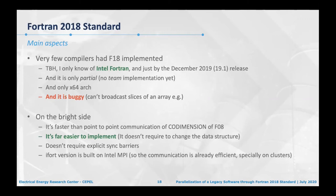It is a new feature, so bugs are expected. On the brighter side, it is faster than the point-to-point communication of co-dimensioned Fortran 2008. It is far easier to implement because I don't need to change my data structure like with OpenMP, or co-dimension variables like traditional coarrays. It doesn't require explicit sync barriers since collective functions have built-in barriers, and Fortran 2018 collective functions are built on Intel MPI, so communications are very efficient.